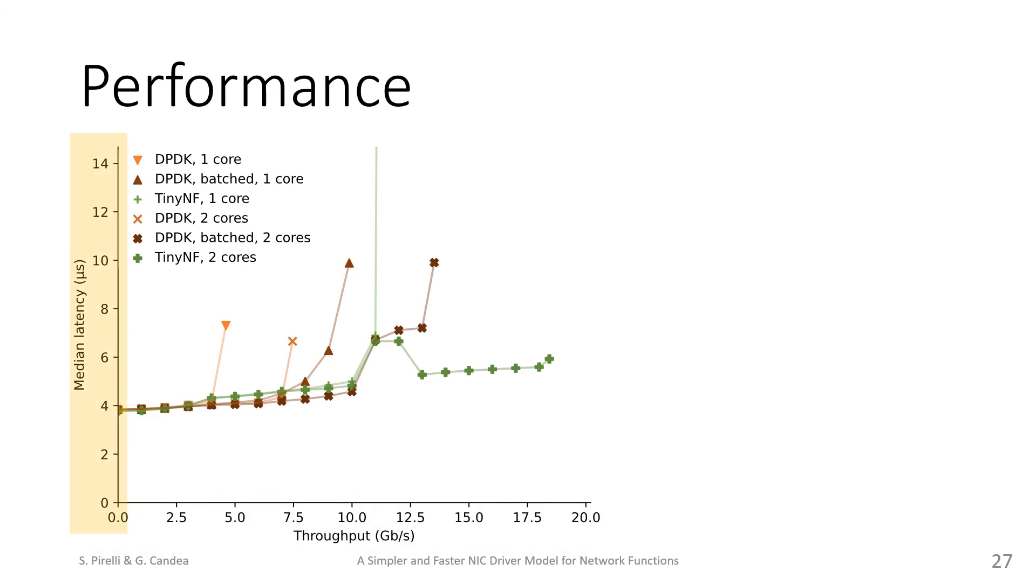We stop when the policer drops packets. We measured three drivers: the verified DPDK driver subset from Vigor, the full DPDK driver, and our driver, TinyNF. All three come in one and two core variants to make sure our driver can work with parallelism.